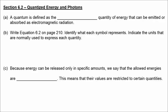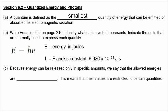Now we move on to Section 6.2, quantized energy and photons. A quantum is defined as the smallest quantity of energy that can be emitted or absorbed as electromagnetic radiation. Equation 6.2 on page 210: E stands for energy in joules, H represents Planck's constant — 6.626 times 10 to the negative 34 joule-seconds — and frequency is measured in hertz or inverse seconds. Because energy can be released only in specific amounts, we say that the allowed energies are quantized.